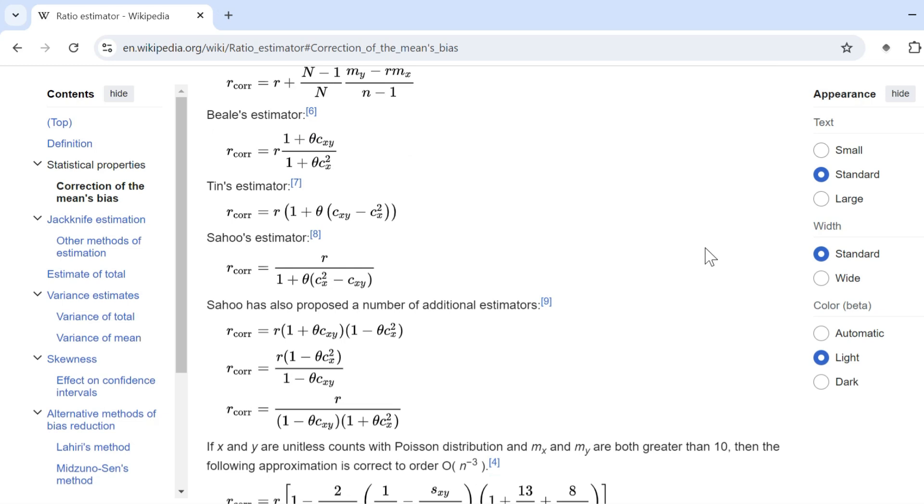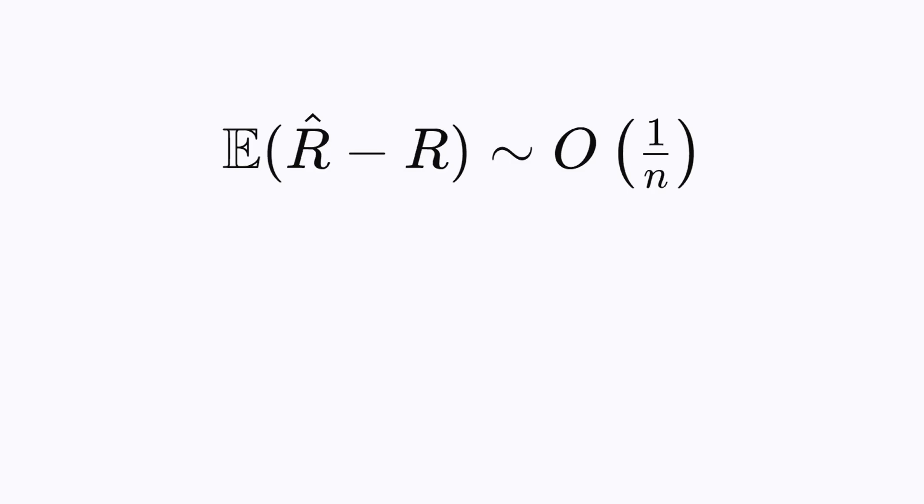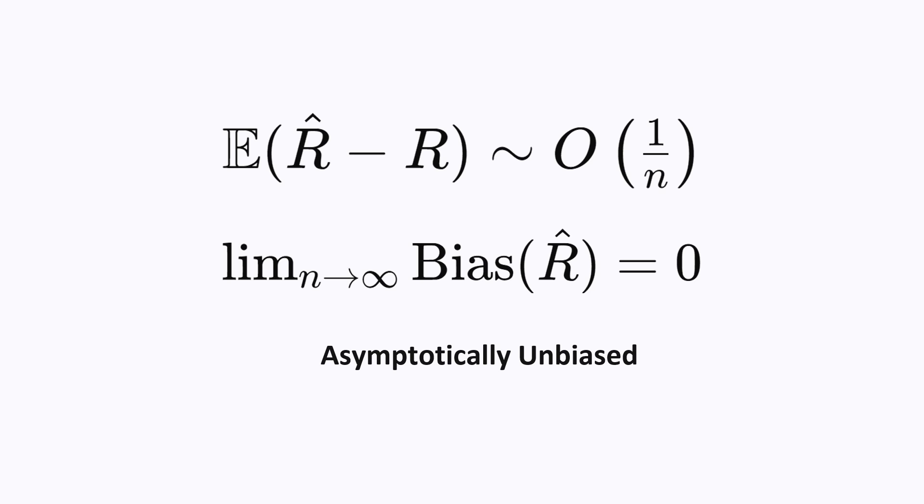But why is this? Why should we not try to correct for the bias? The first reason is, the bias is simply not very big. Especially as the sample size grows larger, the expected bias is on the order of 1 over n. So as n gets bigger and bigger, the bias of this estimator goes towards 0. In other words, it is asymptotically unbiased.